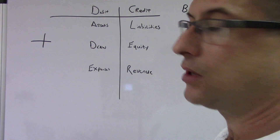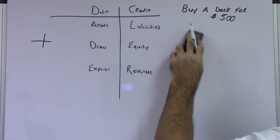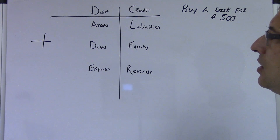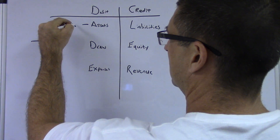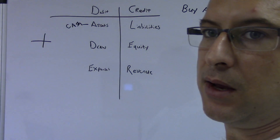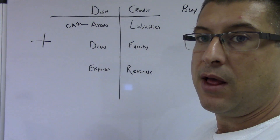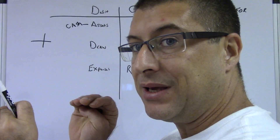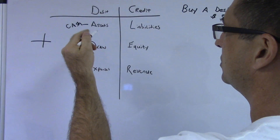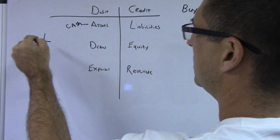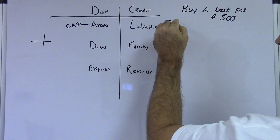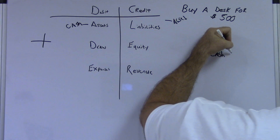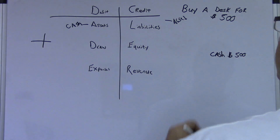You buy a desk for $500. I always like to do cash first — $500 cash. Cash is an asset, and you bought it for $500, so that's leaving. The positive side for an asset is debit, so since it's leaving, that's going to be a credit — a negative asset. So cash $500 is going to be the credit.